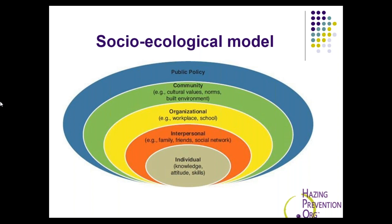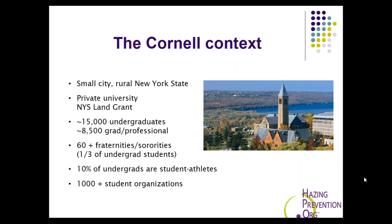At the community level, we're talking about the different communities that people belong to, either based on their identities, religion, culture, geographic community, and what the norms are from where they've come from and what the norms are of the community in which they currently exist. That can also include the institutional level — what are the institutional norms at the college campus. Then lastly, at the public policy level — sometimes considered the society level — these are the local, state, and national laws and policies that exist and have an influence over communities.